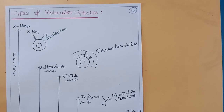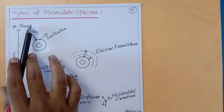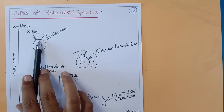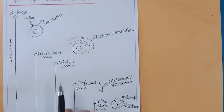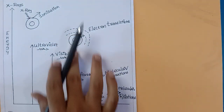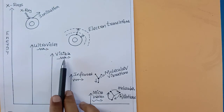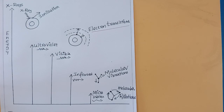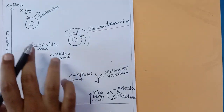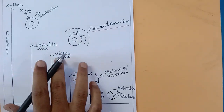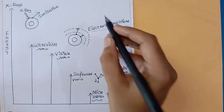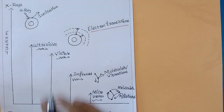Let's look at the types of molecular spectra. If you expose a molecule to X-rays, ionization occurs — electrons leave the atoms. If you expose an organic or test molecule to ultraviolet radiation or visible radiation, electron transitions occur — the electrons are excited from ground state to excited state. These two types of radiation, when they strike a test organic molecule, cause electron transitions.